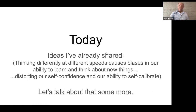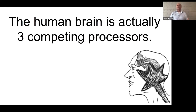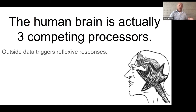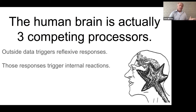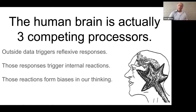That distorts our self-confidence, as we talked about last week, and our ability to test our own knowledge and self-calibrate so that we have a better sense of what we do know and what we don't know. And today we're going to take that discussion further — stepping forward by taking a step back and looking at those three different processors sitting in our skull. Outside data triggers the fast reflexive responses that we have no control over, and those responses then trigger the strong emotional reactions that then inform and bias our thinking.